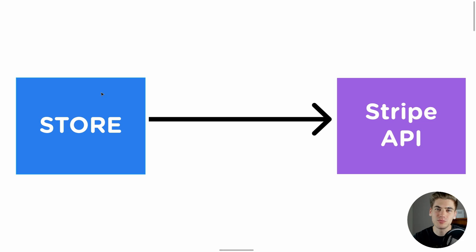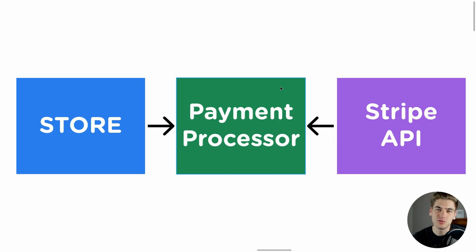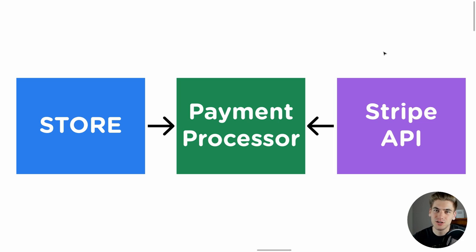What happens in the dependency inversion principle is that you add in a piece in the middle — an interface — which contains all of the behavior that we want our API to be able to do. We implement this payment processor and now our store calls the payment processor, saying payment_processor.checkcreditcard or payment_processor.makePayment. This payment processor doesn't depend on anything — it's just a set of functions we can call. Then we have a specific implementation, so we have our Stripe implementation of the payment processor, and we plug that into our store.